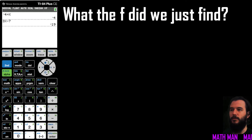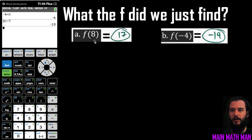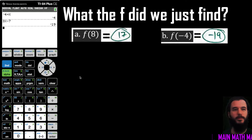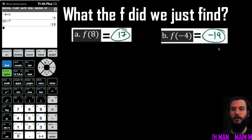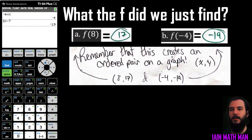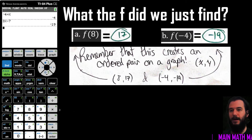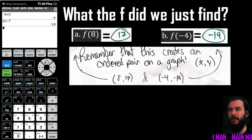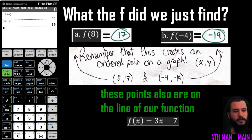We found f of 8 equals 17, and f of negative 4 equals negative 19. What does that mean? The function at the point 8 equals 17, and the function at the point negative 4 equals negative 19. More importantly, these create ordered pairs on a graph. You need an x value and a y value to make an ordered pair — so part A gives ordered pair (8, 17) and part B gives ordered pair (−4, −19).